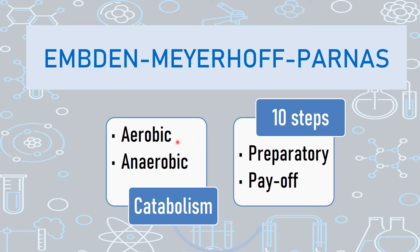Aerobic or complete breakdown of glucose means glucose is being completely broken down into carbon dioxide. Glucose is a 6-carbon sugar, so aerobic breakdown means all 6 carbons are released as carbon dioxide. Anaerobic or incomplete breakdown means the 6 carbons are not broken down to carbon dioxide alone — instead, along with carbon dioxide we may have ethanol or organic acids like lactic acid, propionic acid, or butyric acid. Whatever the case, the EMP pathway is the first step of either aerobic or anaerobic breakdown of glucose to yield energy.